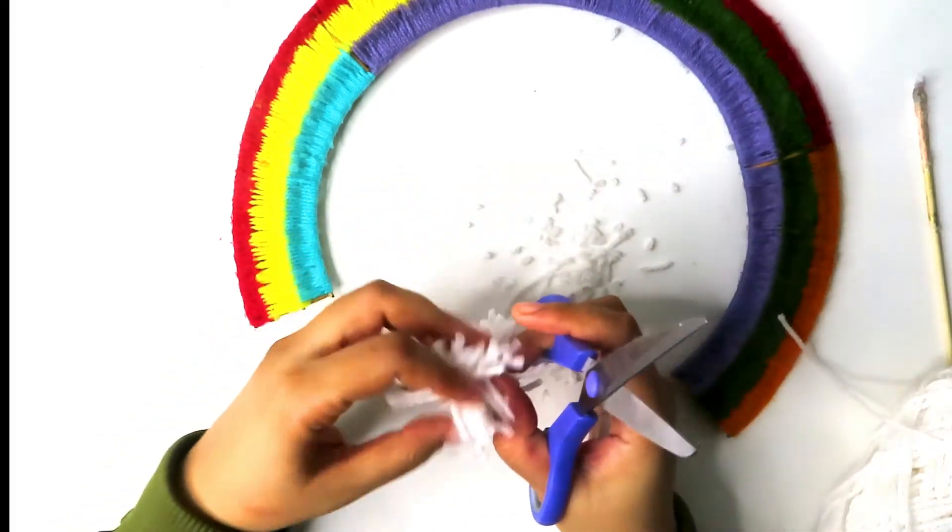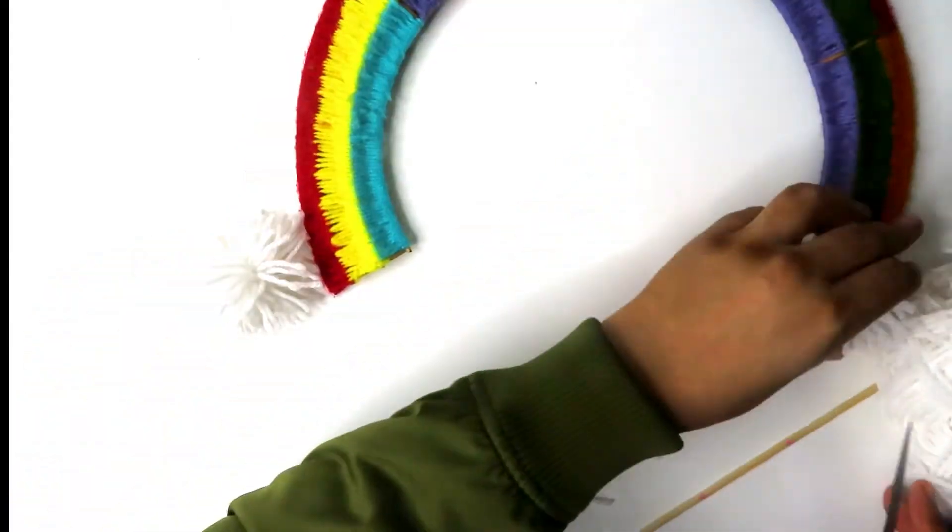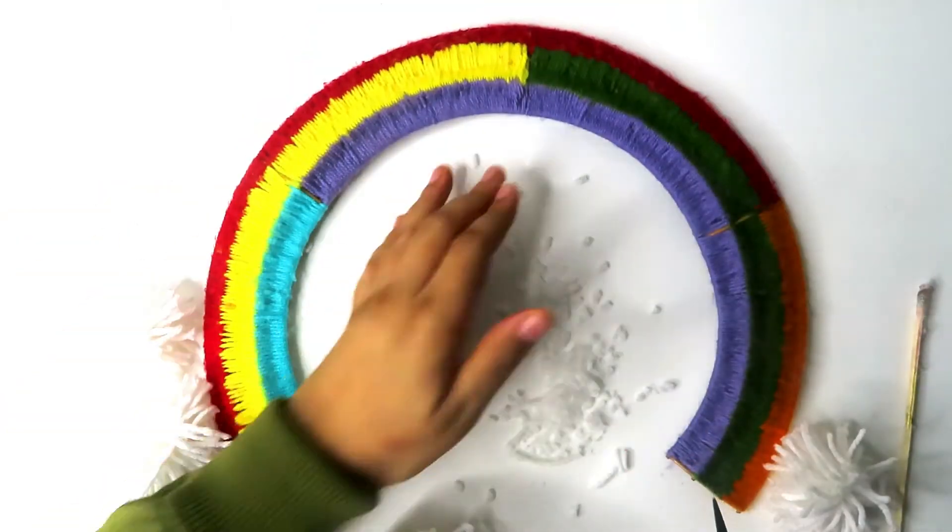Then fluff your pom-pom out and you're good to go. You're going to make two rows of pom-poms on each side of the rainbow. Three at the bottom and two at the top.